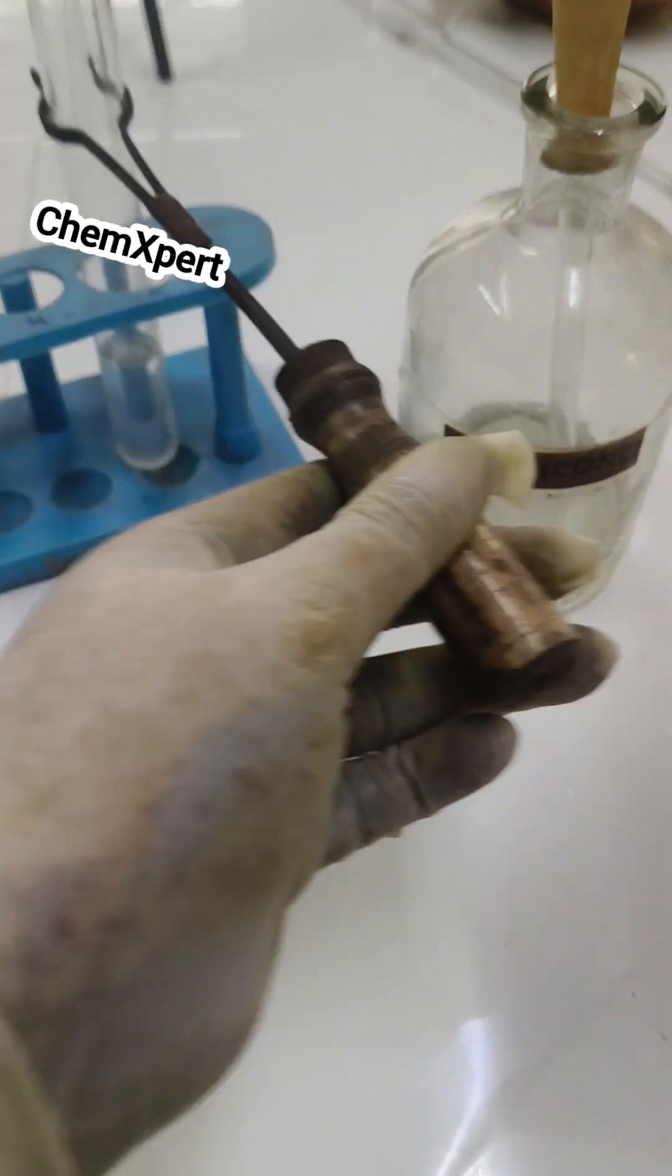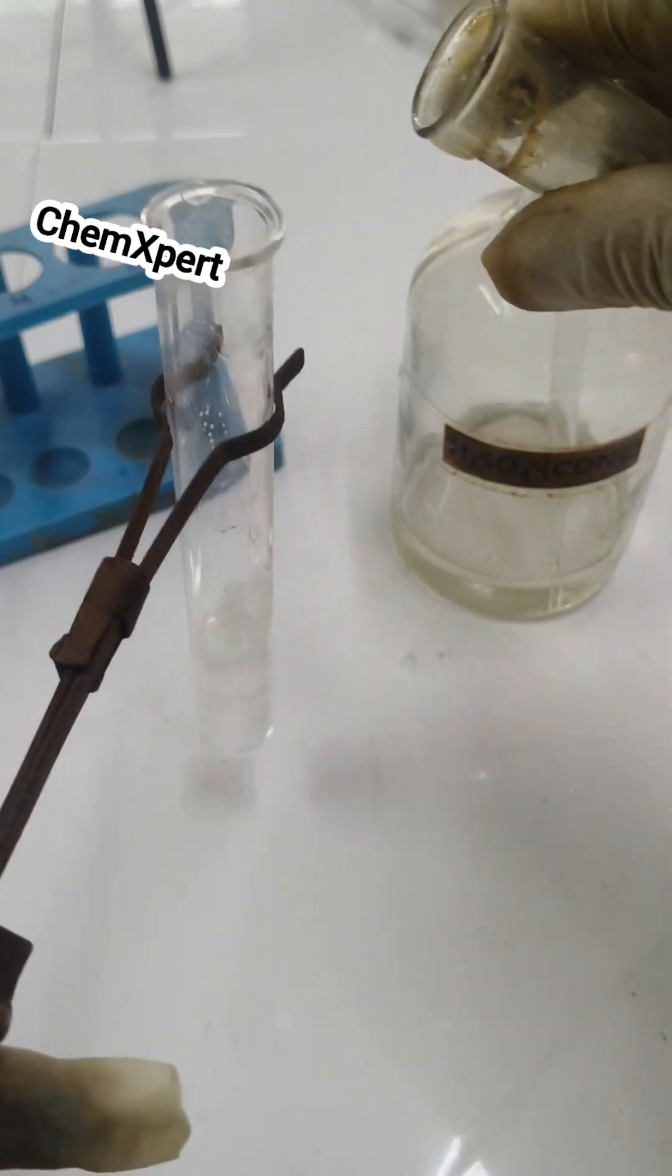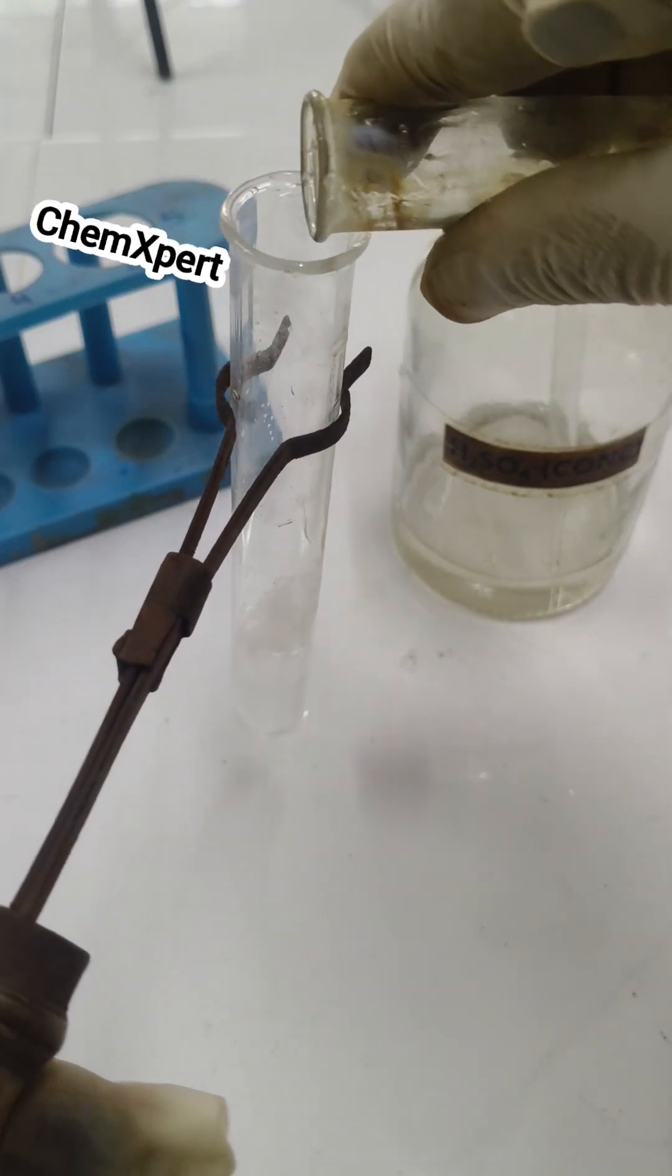In another test tube, prepare the freshly prepared FeSO4 solution, that is ferrous sulfate solution, and add this solution to the test tube.